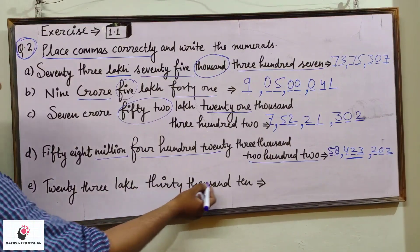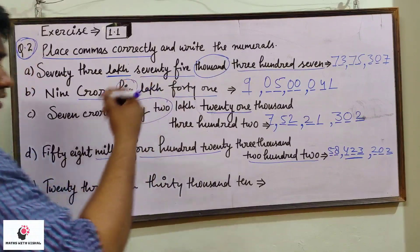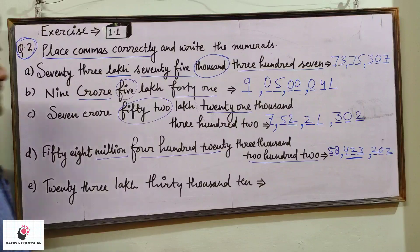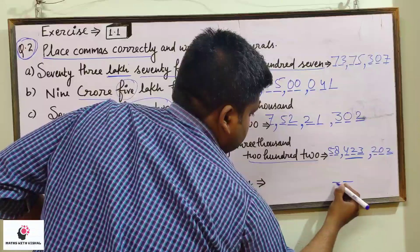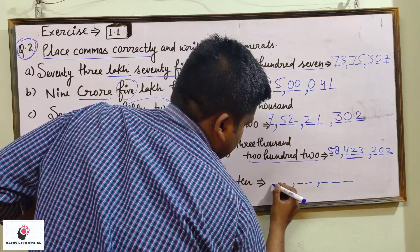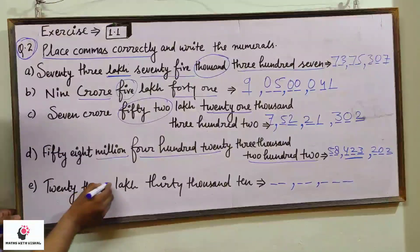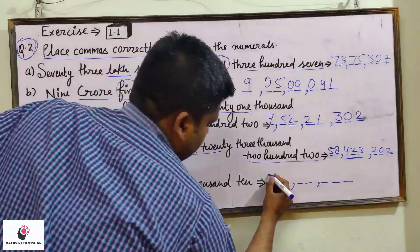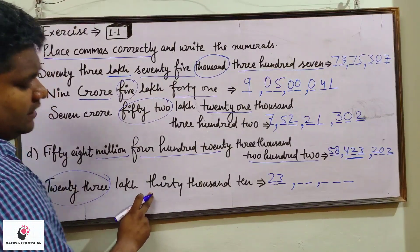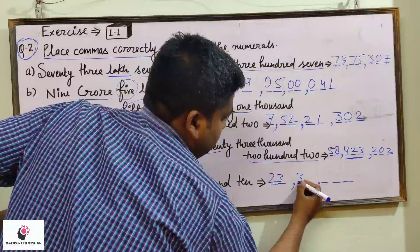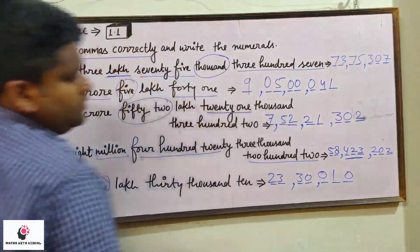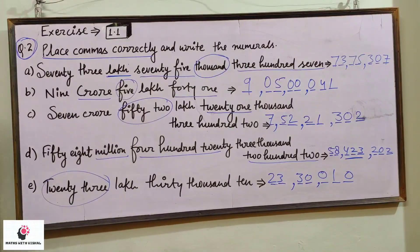Next and last: twenty-three lakh thirty thousand ten. So you are moving up to lakh — it is the Indian numeral system. Ones, tens, hundreds, thousands, ten thousands, lakh, ten lakh. It will be twenty-three at the lakh place, then thirty thousand — 3, 0 at the thousands place — and ten, so hundred is zero. This is your solution.